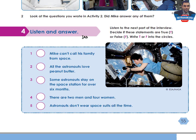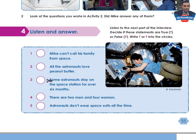Activity 4: Listen and Answer. Listen to the next part of the interview. Decide if these statements are true or false. Write T or F into the circles. Statement 1: Mike can't call his family from space. Statement 2: All the astronauts love peanut butter. Statement 3: Some astronauts stay on the space station for over six months. Statement 4: There are two men and four women. Statement 5: Astronauts don't wear space suits all the time. Now listen carefully and decide if these statements are true or false. Write T or F into the circles, then come back to check your answers.